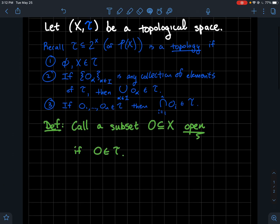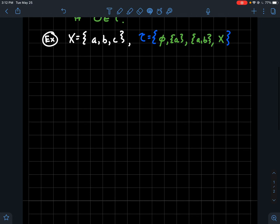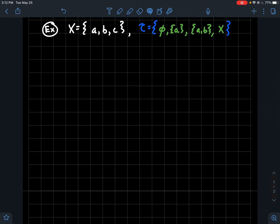You probably remember that. And remember that we're just going to say a subset of X is open if it's an element of this T that we picked out. So to give an example just so we're all on the same page again, let's say X is the set {a,b,c} and let's say T is the topology that has the empty set, just the singleton {a}, the two points {a,b}, and then the whole set X.